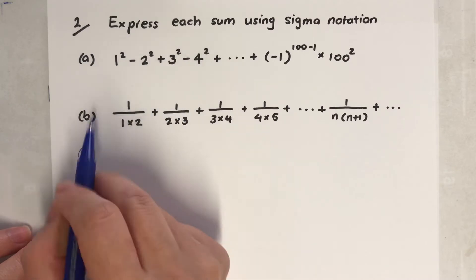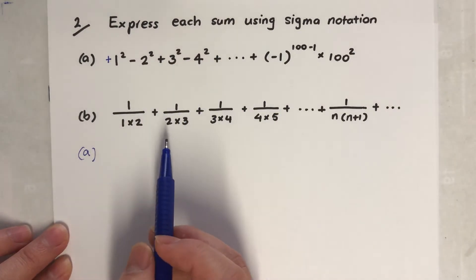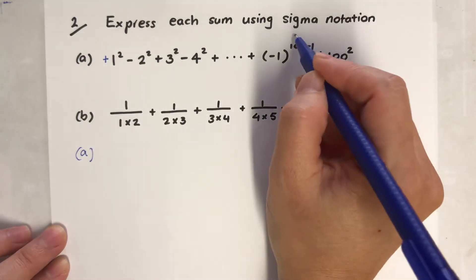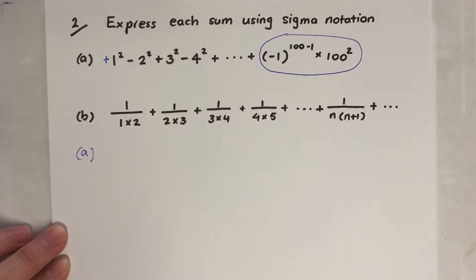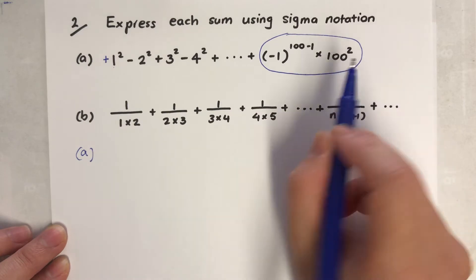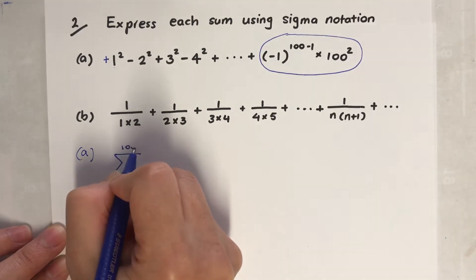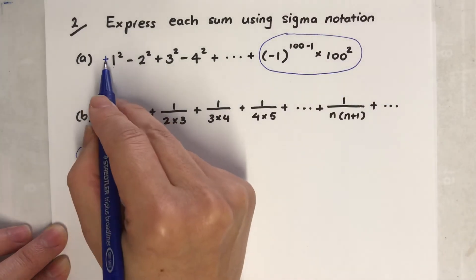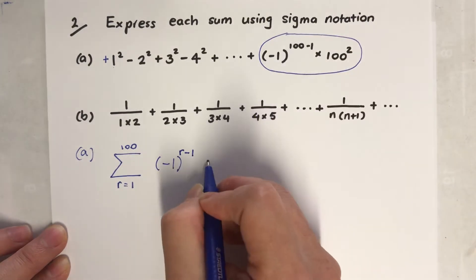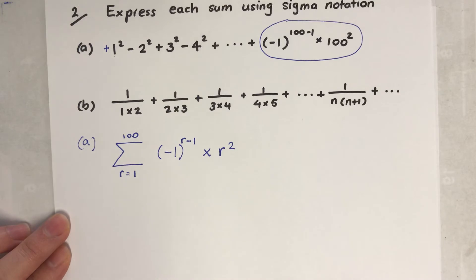The first thing I noticed is the signs are alternating - plus, minus, plus, minus. When this happens, the formula has a minus in it: minus 1 to the power of r. You need to look at the last term because that gives away the formula you want. It goes from 1 to 100, so I'm going to write sigma notation from r equals 1 to 100. The formula is minus 1 to the r, times r squared.